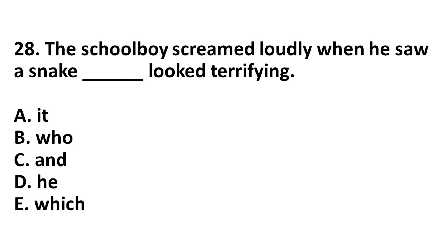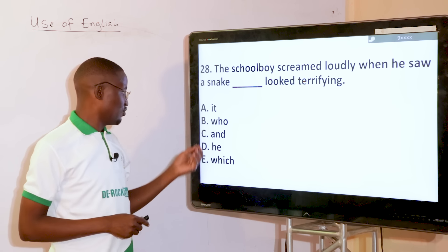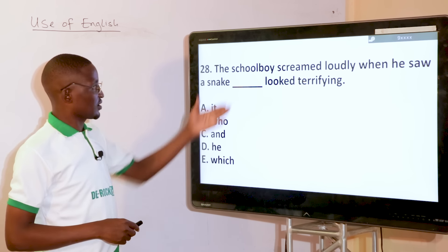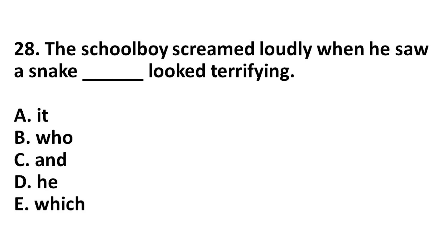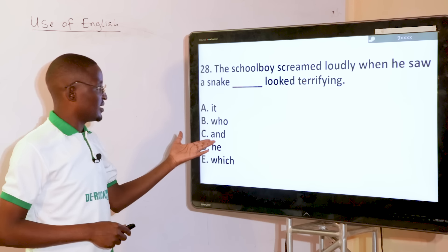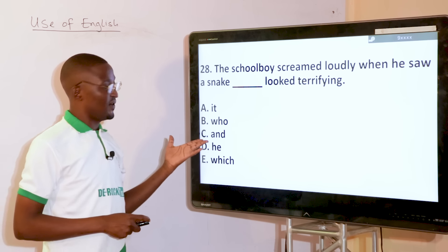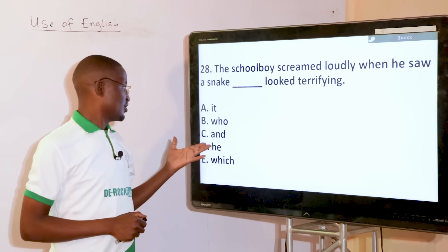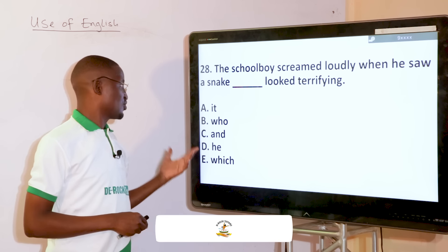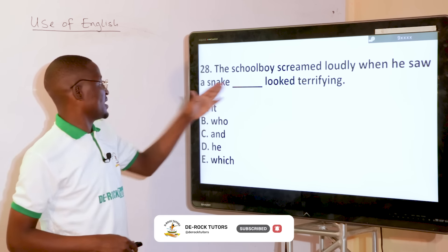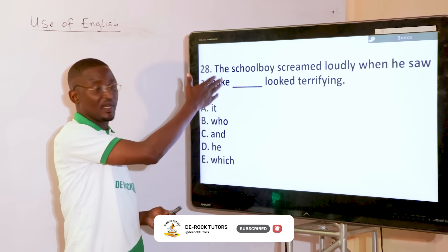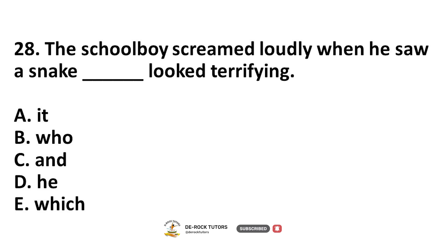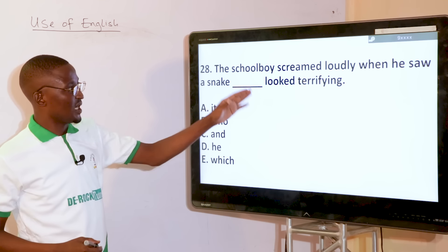The schoolboy screamed loudly when he saw a snake that looked terrifying. Options: it, who, and, he, which. We are talking about a snake — you should not use a human attribute like who or he, and and is a coordinating conjunction which doesn't apply. The answer is which: the schoolboy screamed loudly when he saw a snake which looked terrifying. You also couldn't repeat it since the snake has already been mentioned.